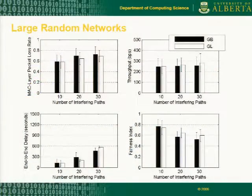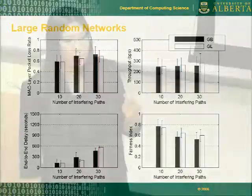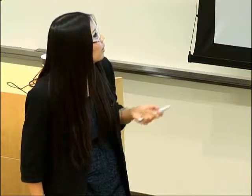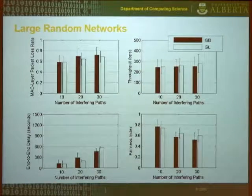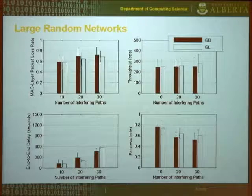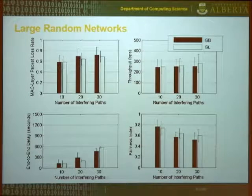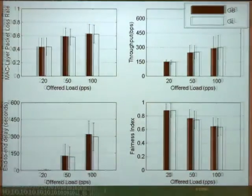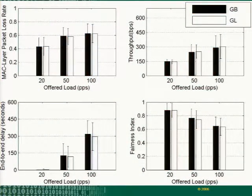We did the same experiment in a larger random network with 10, 20, and 30 random source-destination pairs, varying the level of interference. Our mechanism achieves similar — and sometimes slightly better — packet loss rate, end-to-end delay, throughput, and fairness compared to the global optimization. We also vary the traffic load and it shows similar results.